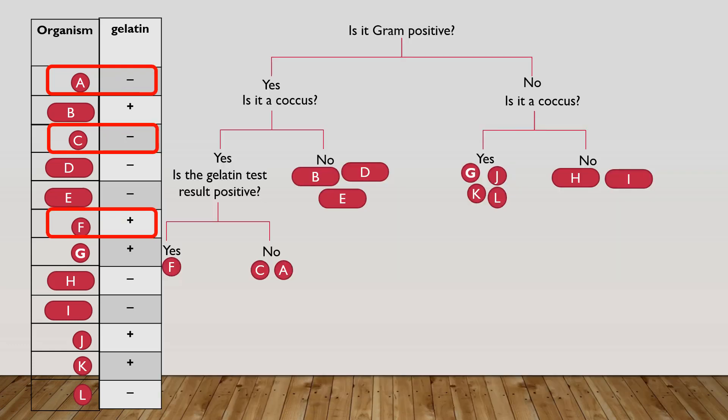So for this example, I'm going to ask the question, is the gelatin test positive? Yes or no? Now I've reached the end with bacteria F since it's all by itself. So I need to ask a second question to separate bacteria C from bacteria A.